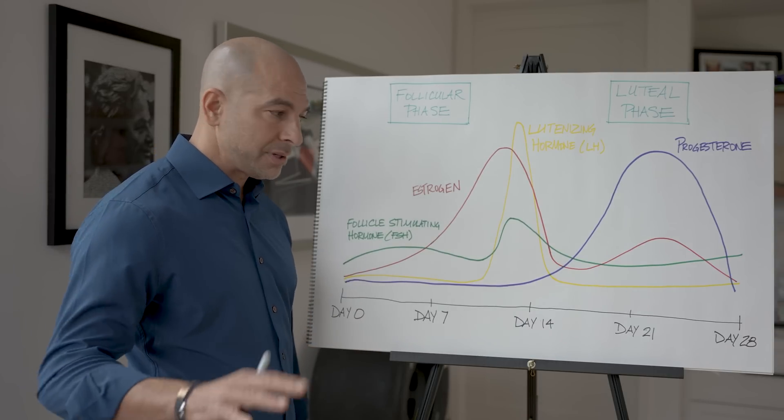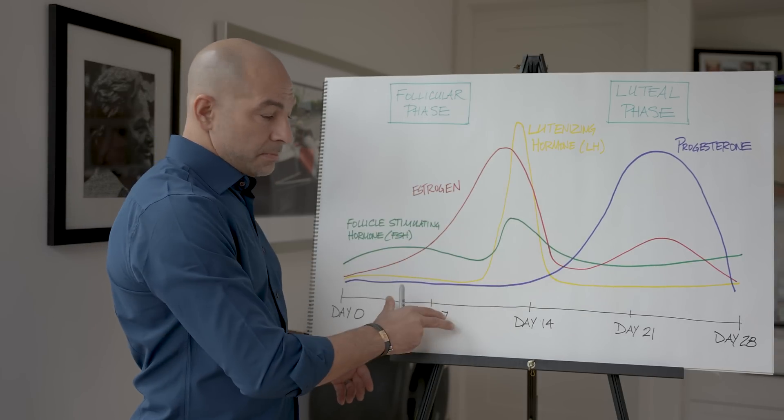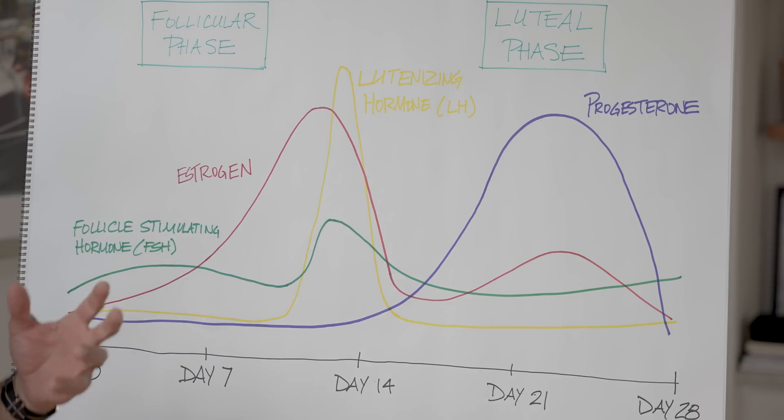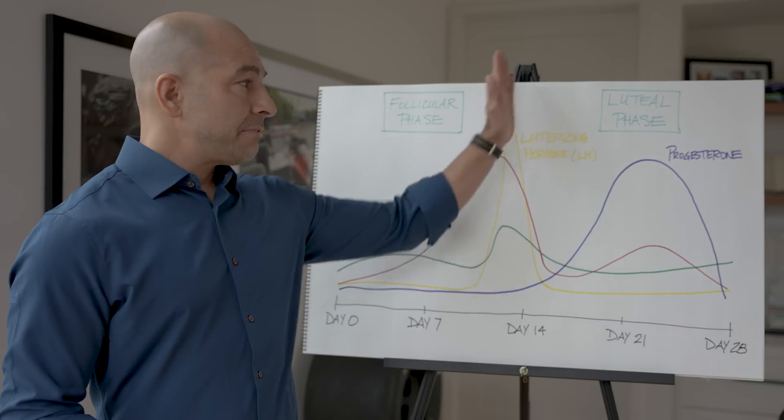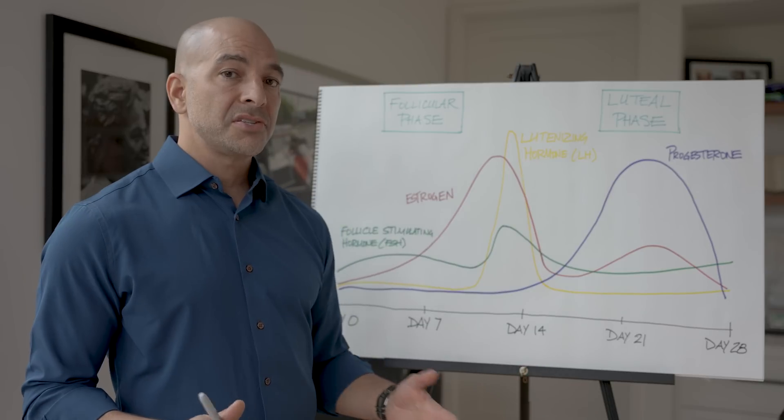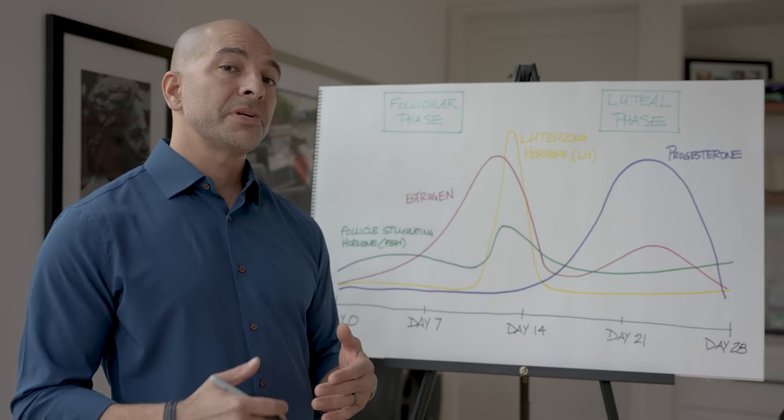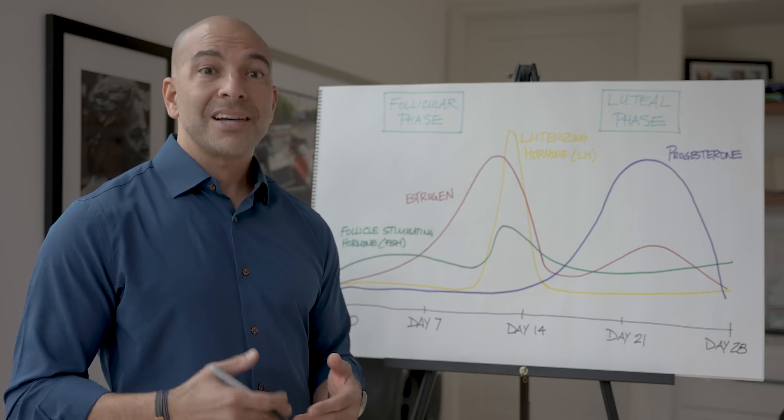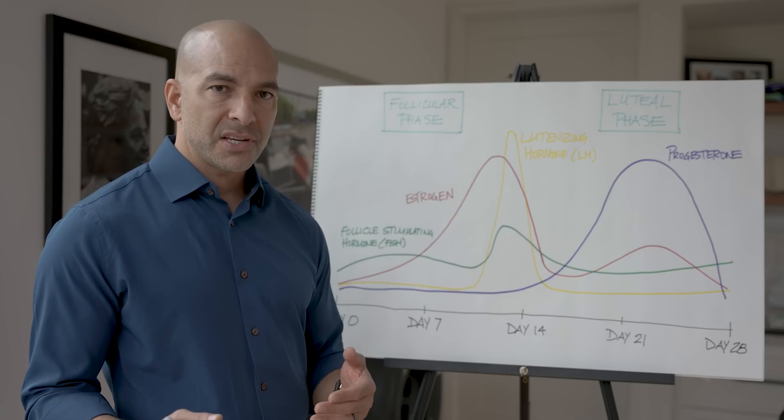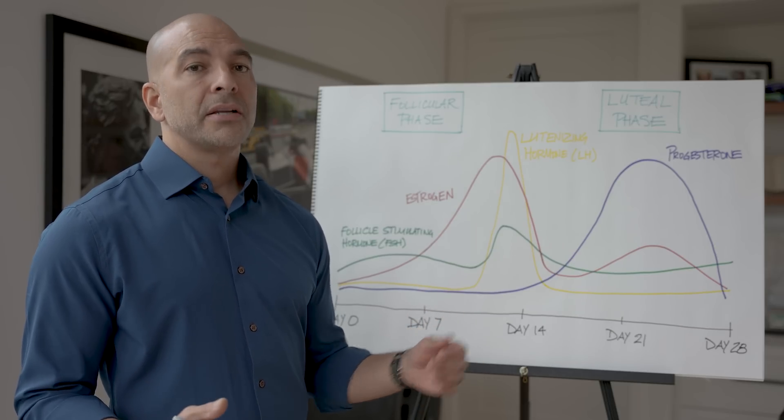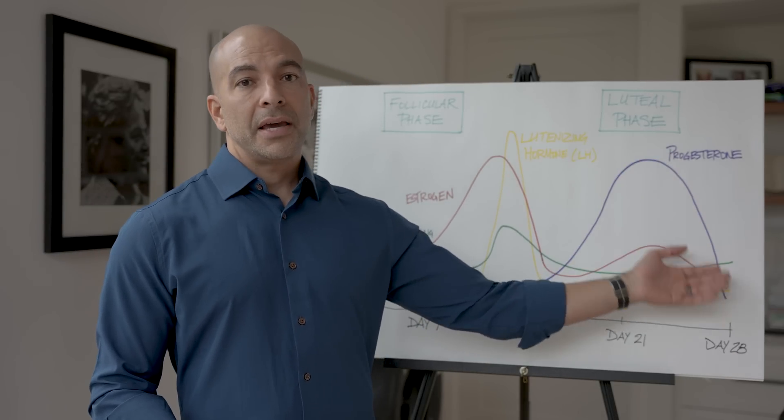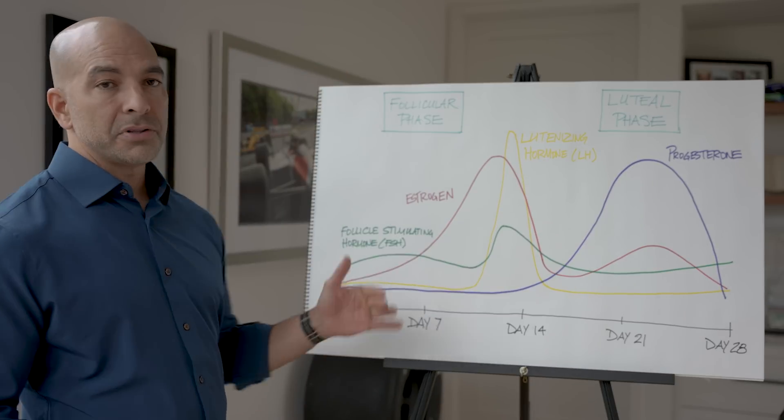That's the shedding of the endometrial lining. Then you move into a follicular phase, which is really driven by follicle-stimulating hormone and estrogen. The purpose of that phase is to ripen the follicle for ovulation. Ovulation takes place mid-cycle. After ovulation, we move into the luteal phase. The luteal phase is dominated by luteinizing hormone and progesterone, and the purpose is to prepare the endometrial lining for implantation. When the body realizes we're not pregnant, the endometrial lining gets shed. That crashing progesterone level results in the shedding of the lining, which is the period, and the cycle begins again.